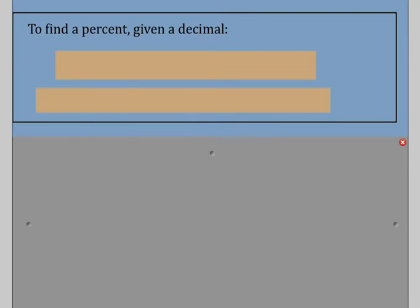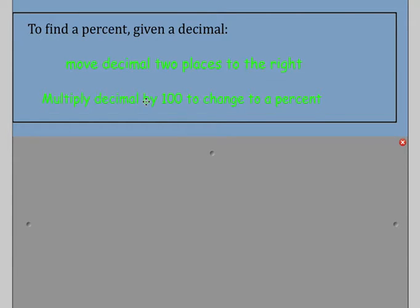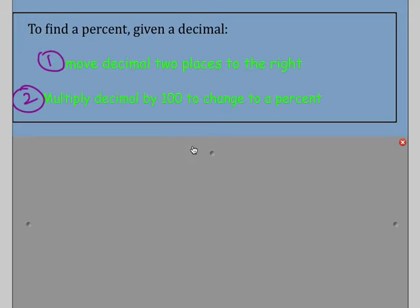Now what if you would like to find a percent and you're given a decimal? We just did that — you're going to move the decimal two places to the right. The other option is to multiply the decimal by 100 to change it to a percent. These two things do the same thing. Multiplying by 100 is the same as moving two decimals to the right, or vice versa. So these are just two different options on how to make something into a percent.